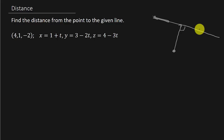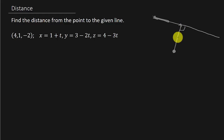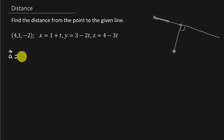So how can I find a vector from the point (4, 1, -2) to this line such that the vector is perpendicular to that line? We'll call this vector A.